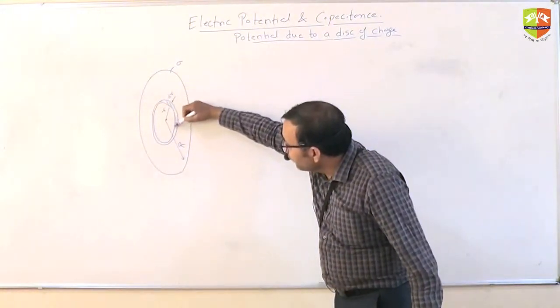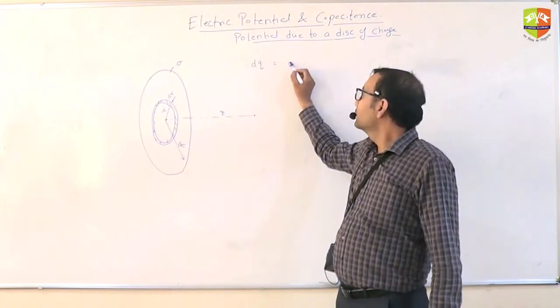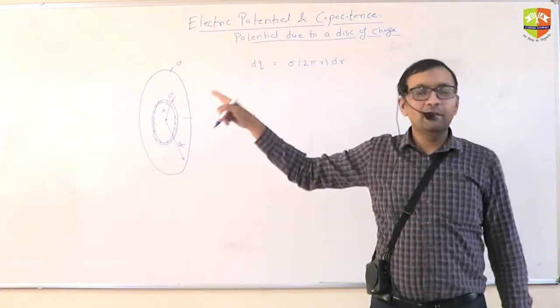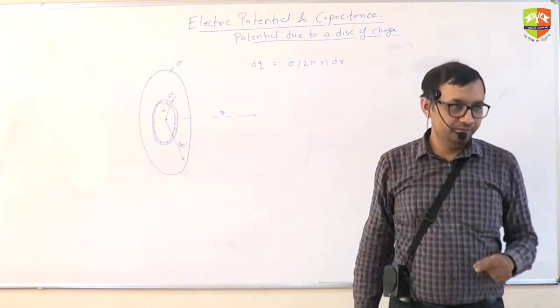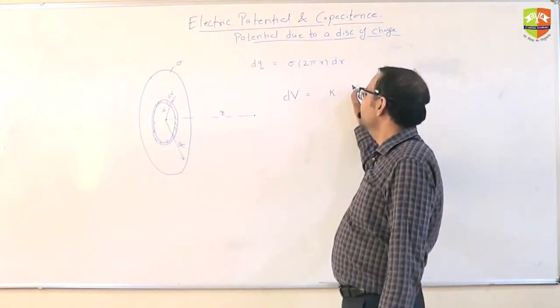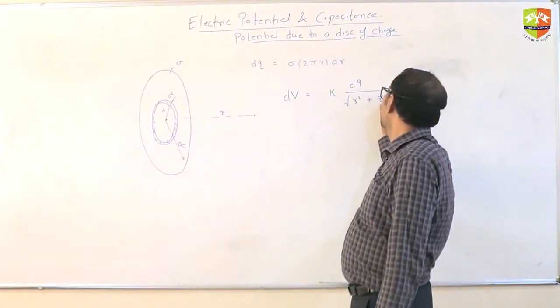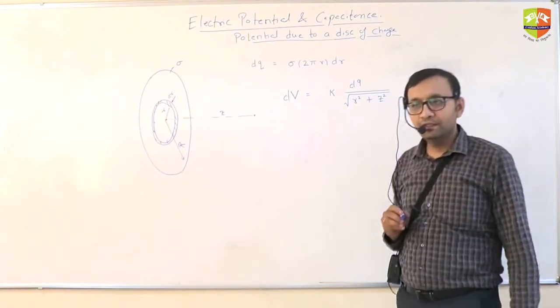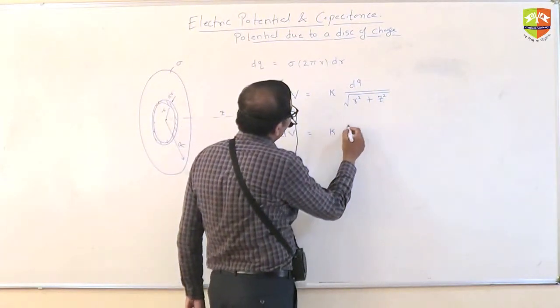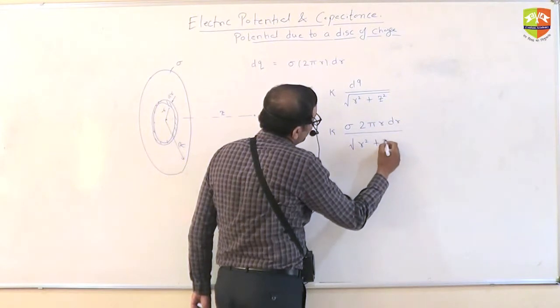what is the potential due to this ring of radius small r and width dr? How much is the charge on it? dq is what? Sigma into? 2 pi r dr. Sigma is charge per area. You have to multiply that with area of the ring. The width of the ring is dr. This is dq. And potential due to the ring was what? k times dq divided by root over r square plus z square. So now, I'll substitute the value of dq which is k sigma 2 pi r dr divided by root over r square plus z square.